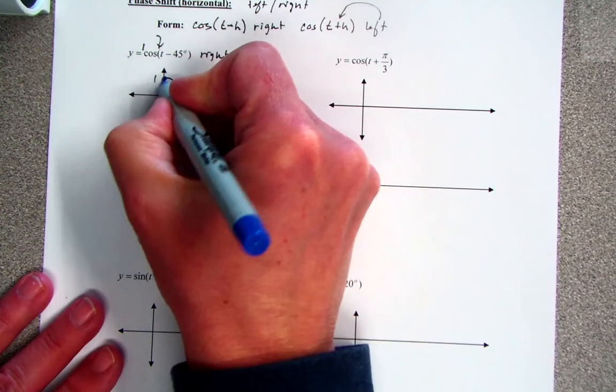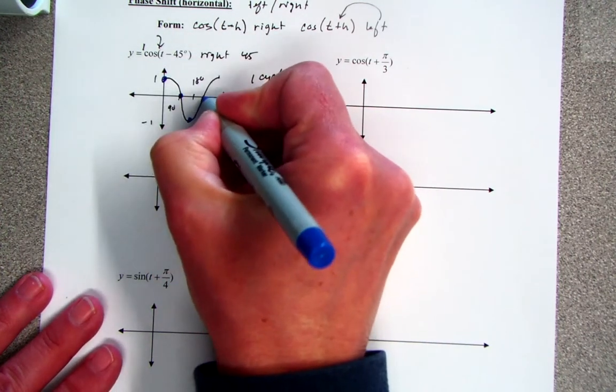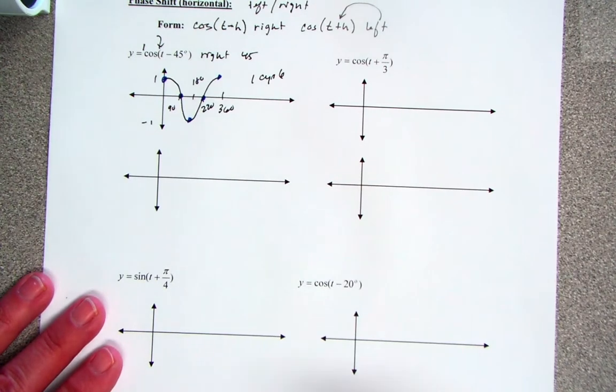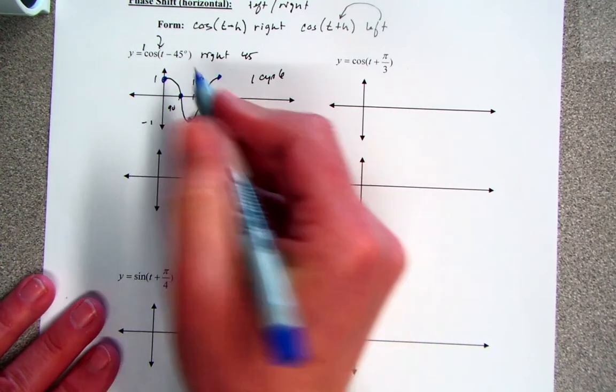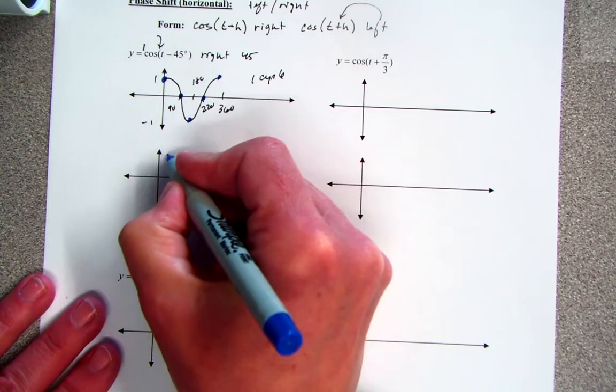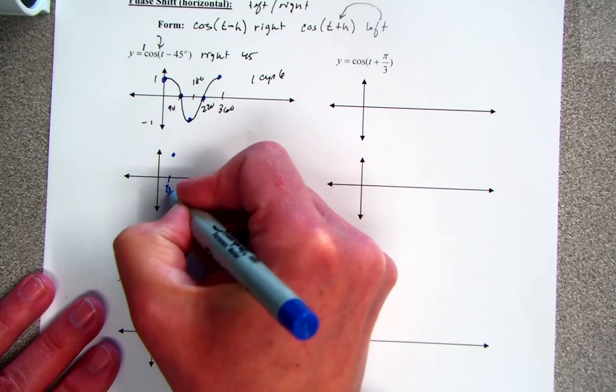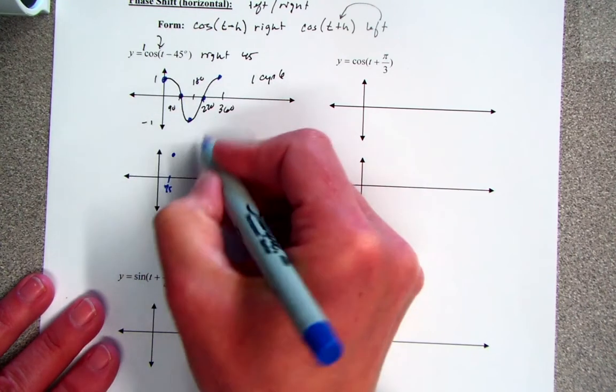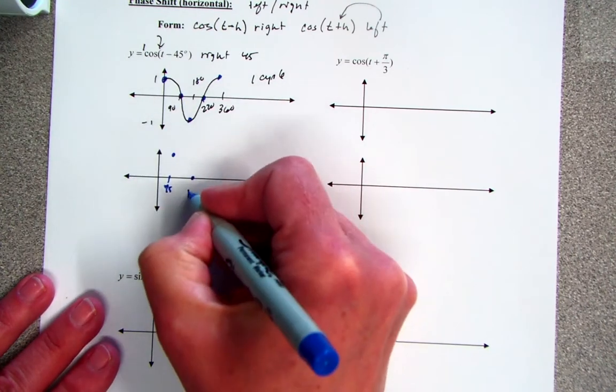That means these points that I can easily identify will be pulled to the right 45. So instead of starting at 0, I'm going to move it over to 45. Instead of being at 90, I'm going to pull it over 45 more, which is 135.